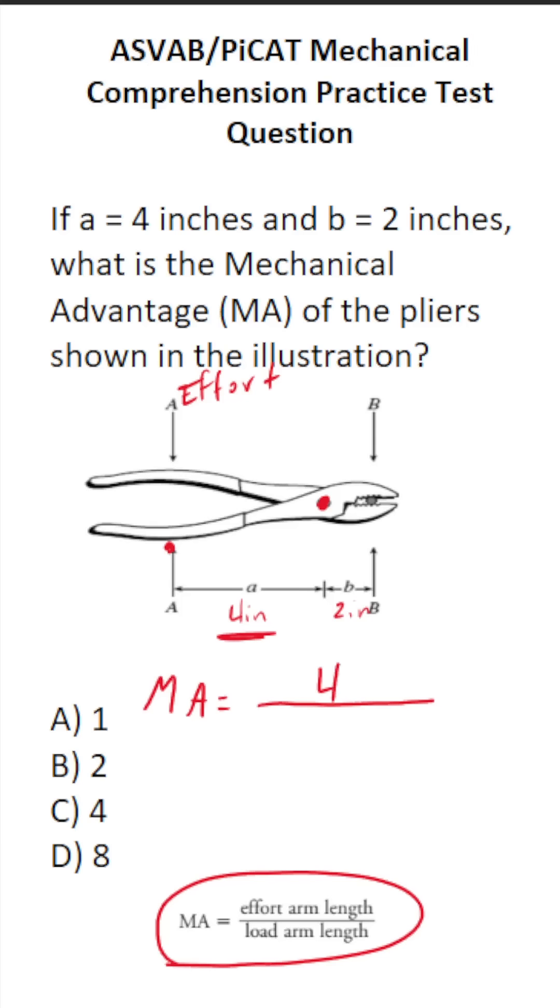What is the load arm length? Well, these pliers are squeezing this right here. So it's going to be the distance from this load right here to the fulcrum right here, which, as you can see, is 2 inches. So the mechanical advantage in this case is 4 divided by 2, which is 2. So this one is B.